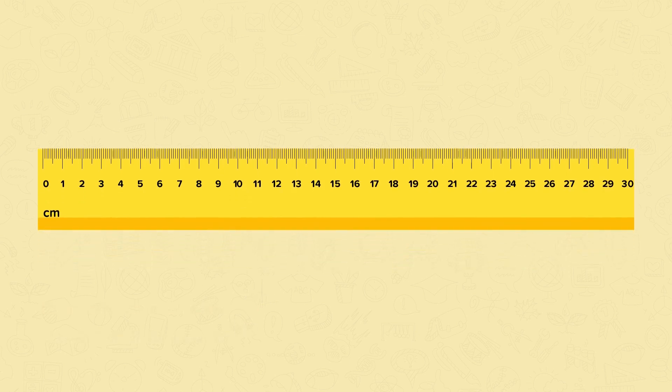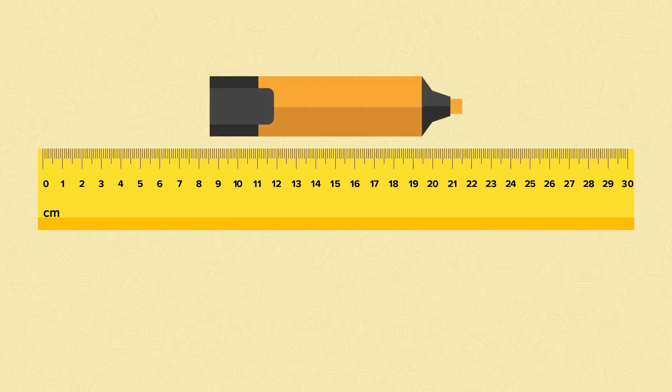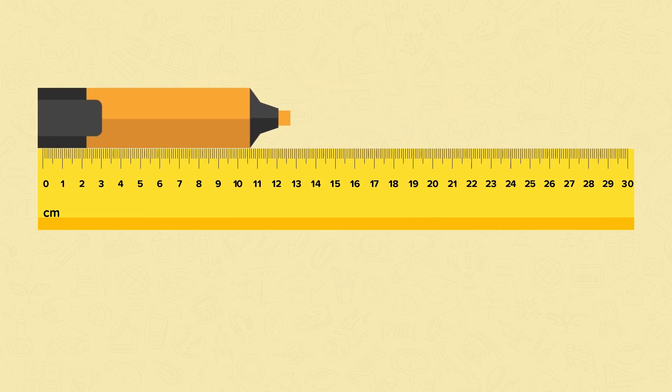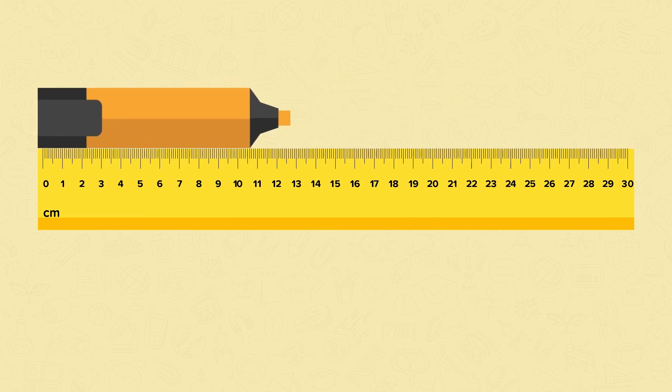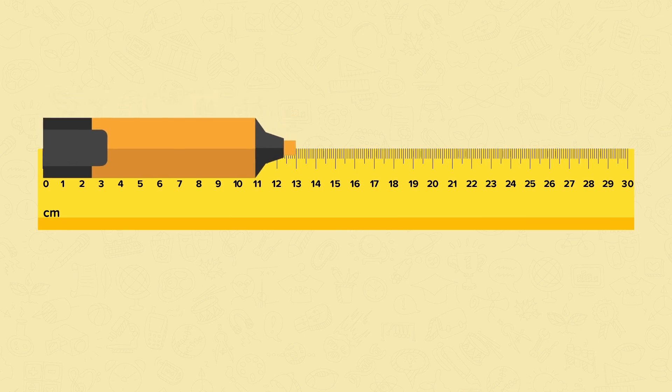Now let's move on to measuring some other objects. We'll start with this highlighter pen. Let's line it up. Remember, we're not lining it up with the end of the ruler. We're lining it up with zero. Sometimes it might be easier to put the object on top of the ruler, or put the ruler on top of the object. This highlighter pen is 13 centimetres long.